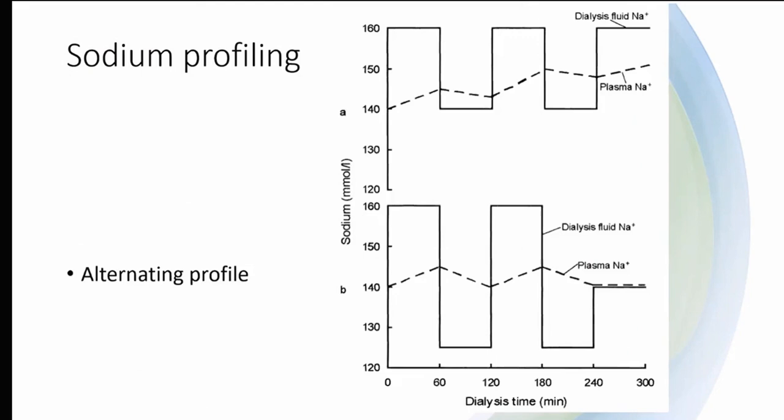This is an example of an alternating profile, whereby you change between high and low sodium throughout the session multiple times. The top example shows a change between 160 and 140 — between high and neutral — and this represents an unbalanced sodium profiling whereby there is a net gain in sodium at the end of dialysis. The second example is a more balanced sodium profile, where you change between high and low, and at the end of dialysis there is a neutral sodium balance.